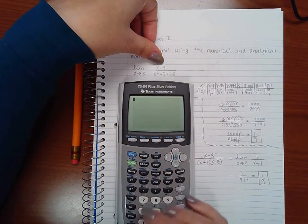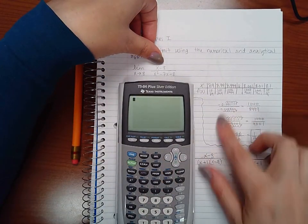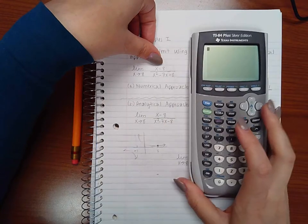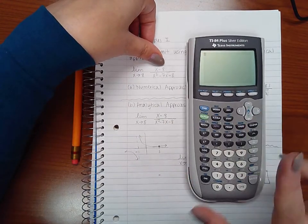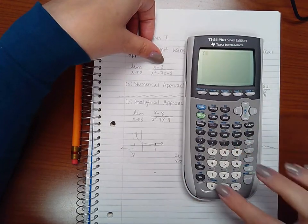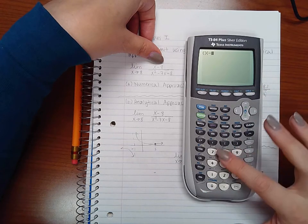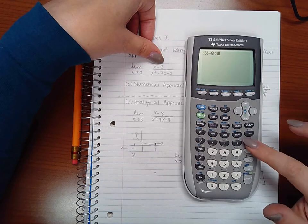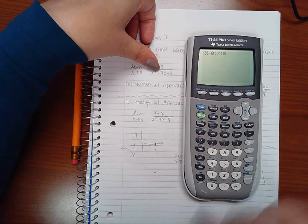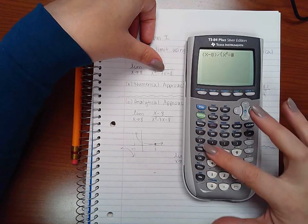If you plug in, and I think I did some algebra over here, but let's go ahead and figure this out. I'm going to program my calculator first. So my numerator is (x - 8) divided by my denominator (x² - 7x - 8).